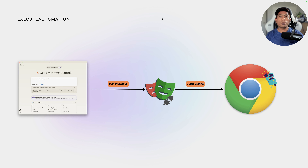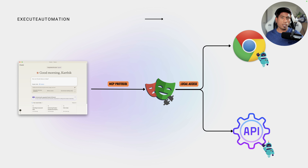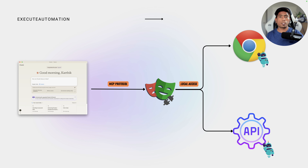Today in this video I'm going to talk about the all-new feature I've released: support for API testing in the Playwright MCP server. You can now tell the Model Context Protocol to perform API testing operations using plain English text, and it will do all the operations you're looking for. We're going to see a demonstration of how to achieve this.